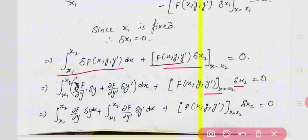Again, delta f can be written as (∂f/∂x)*delta x + (∂f/∂y)*delta y + (∂f/∂y')*delta y'. Since x is fixed, delta x = 0, so the first term is eliminated, and we keep only the second and third terms.